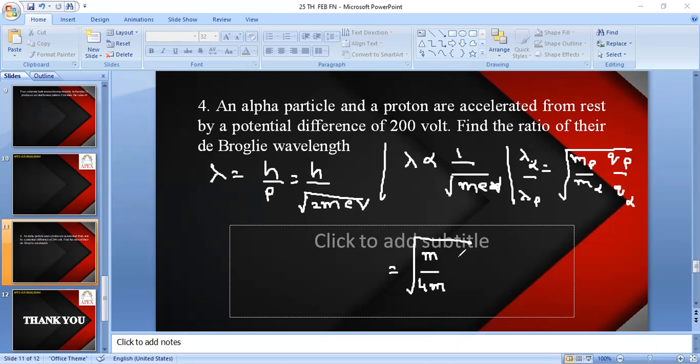Charge of proton is e and the charge of alpha particle - in alpha particle there are two protons and two neutrons. Protons are only charged particles there. So you can write 2e. By solving this you get 1 by 4 into 1 by 2, that is 1 by 8.